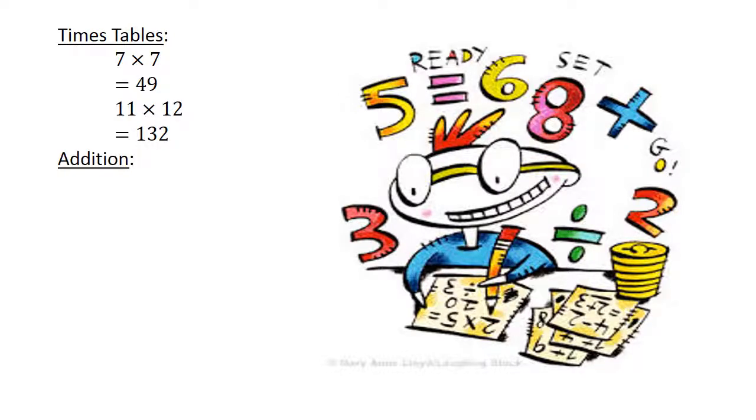Addition. 87 plus 65 equals 152. Subtraction. 43 minus 56 equals negative 13.